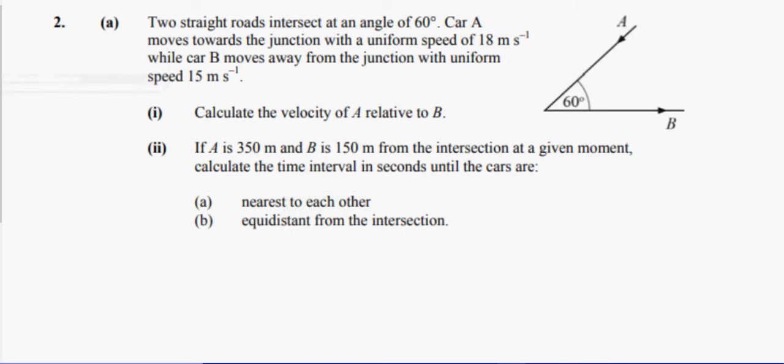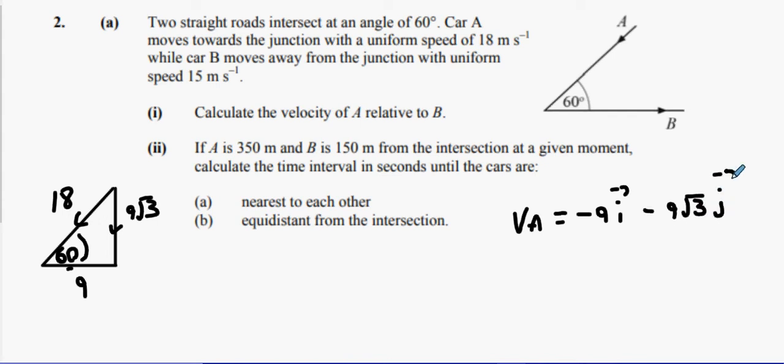Two straight roads intersect at 60 degrees. Car A moves towards the junction at uniform speed 18. I'm going to draw 18 going downwards with 18 going down in this direction at 60 degrees. I'm just going to break it up into its components: 18 cos 60 and 18 sin 60. So 9 and 9 root 3. Therefore we can obtain that the velocity of A is going to the left so it's minus 9i and it's going downwards which is minus 9 root 3 j. We all good with that.